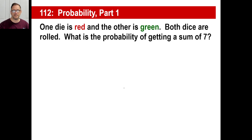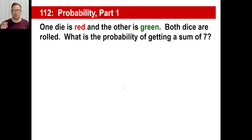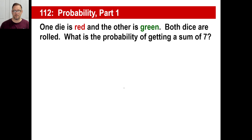One die is red and the other is green. Both dice are rolled. What's the probability of getting a sum of seven? We don't even care that one die is red and the other is green — it doesn't matter at all, as long as they're fair dice. What's the probability of getting a sum of seven? How can we get a seven?